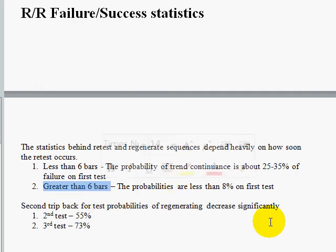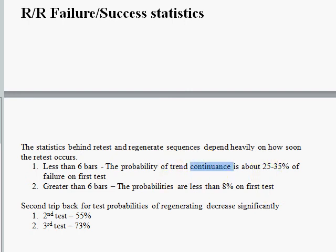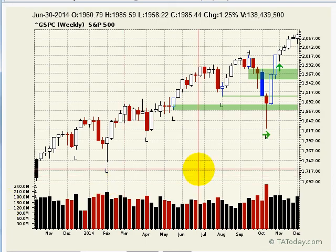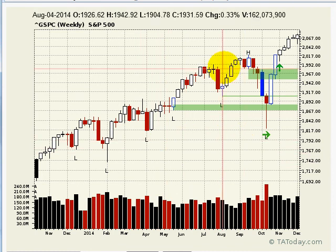So the probability of trend failure is about 25% to 35% on the first test. When you come back, let's go back to a chart here and look at it — I'll pull up a weekly chart so we can look at something different. Here's one. So here we've got a swing point high. We've only got one on this whole chart, which is kind of crazy. Actually, we've got a break on a swing point low here.